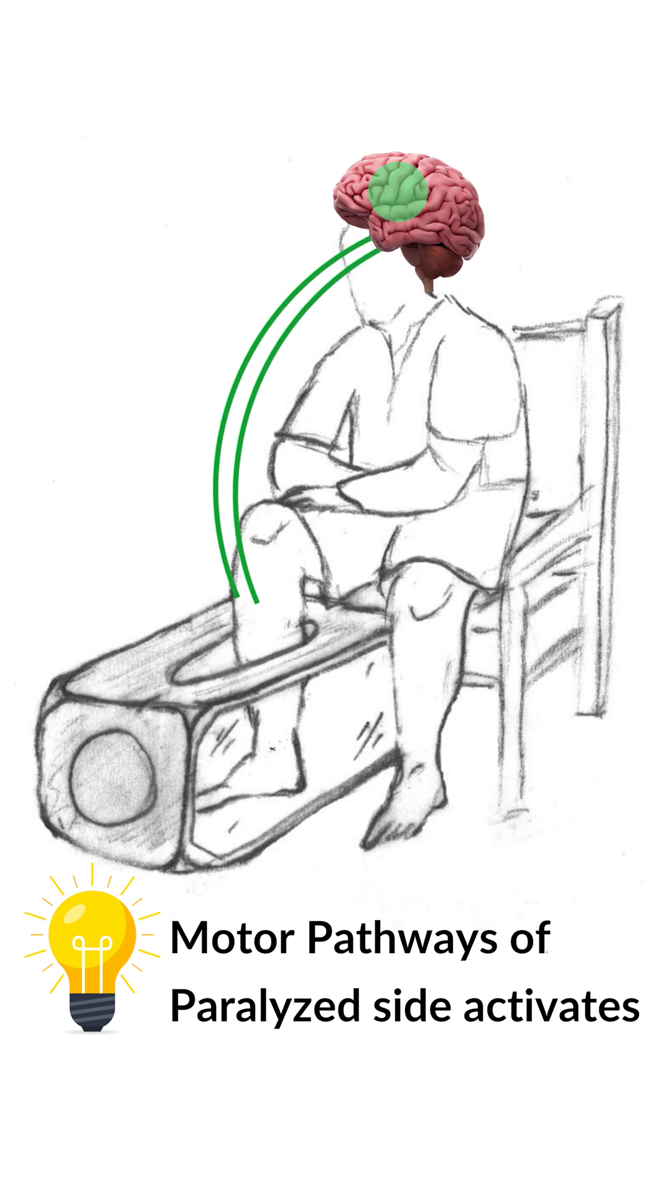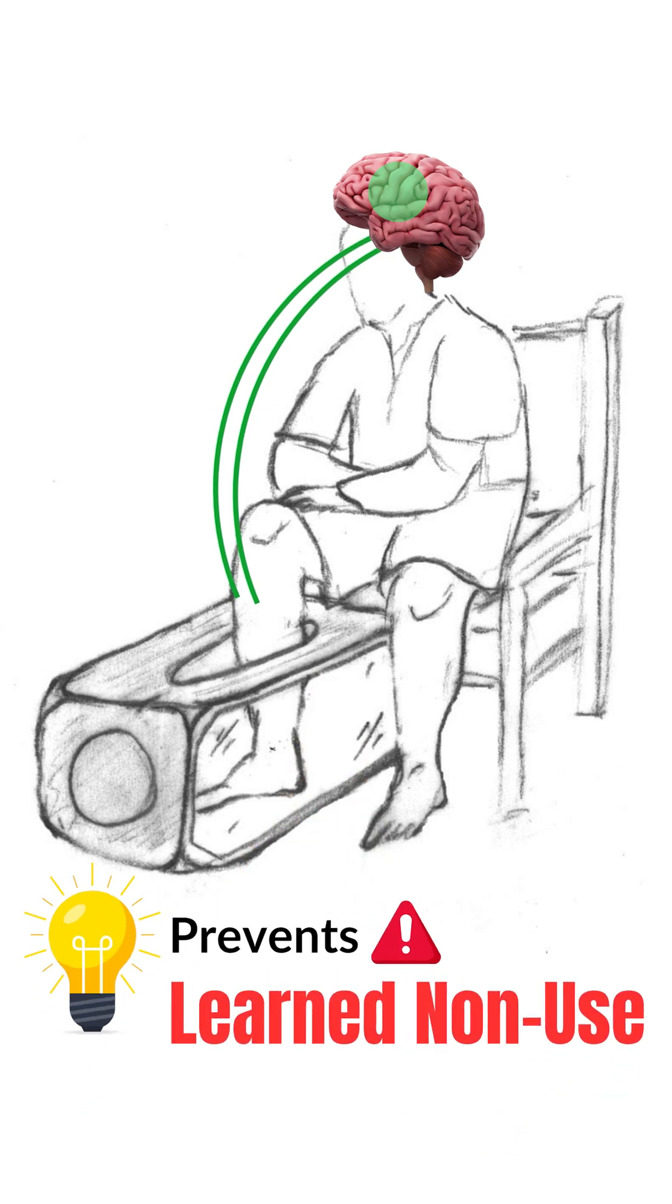By watching the fake movement in the mirror, the brain stimulates the same motor pathways that would normally move the paralyzed limb. Even though the paralyzed side isn't moving, the brain areas related to movement stay active and prevent further forgetting, the use-it-or-lose-it phenomenon.